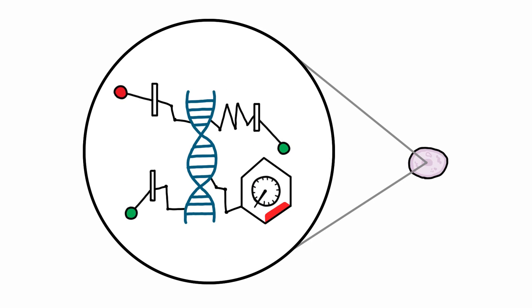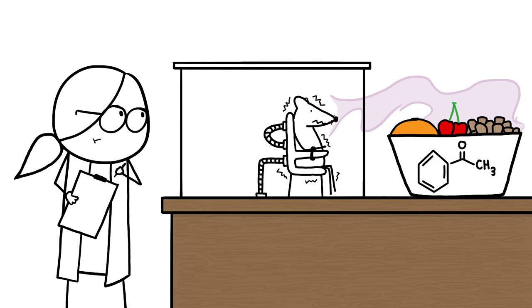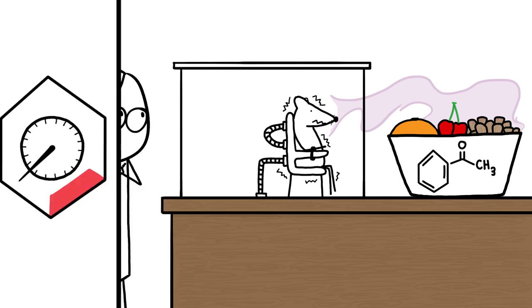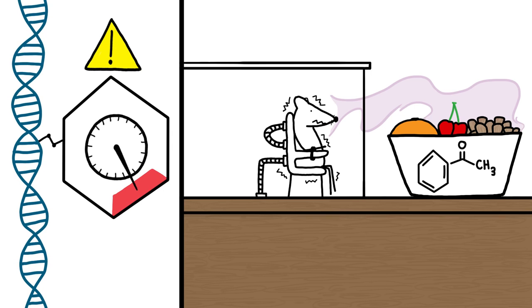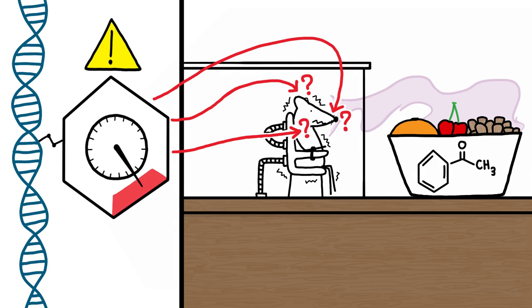But the switches in any one cell aren't set in stone. Teaching those rats to fear the fruity smell switched one of their smell-sensing genes into overdrive. Researchers don't know all the places in the rats' bodies where this switch got flipped, but they know it happened in one key set of cells.